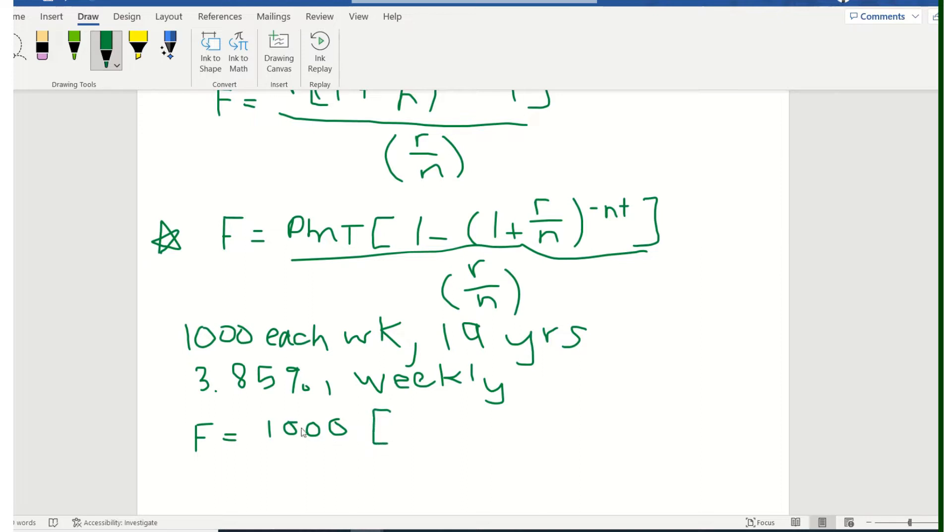So let's fill into this formula. The future value is what we don't know. Her payments are going to be $1,000. The interest rate as a decimal is 0.0385. The number of times a year is 52, since we are compounding weekly. And then this will be negative 52 times the 19 years, and that goes over 0.0385 over 52.